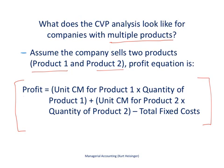We find the profit by looking at the first product and taking the unit contribution margin for the first product times the quantity of the first product. The unit contribution margin is calculated as the sales price per unit minus the variable cost per unit for that particular product. We would then add to that the unit contribution margin for product two times the quantity of product two. If we had a hundred products we would do this for each of those hundred products.